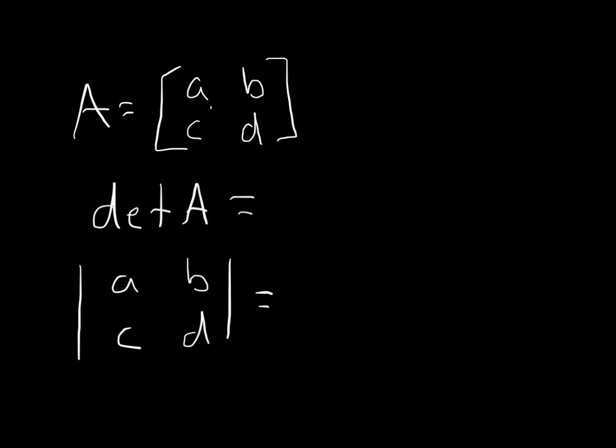So basically what we do here is we just cross-multiply. We're going to do A times D minus, and we're going to multiply the other way, B times C. That's it. That's the determinant.